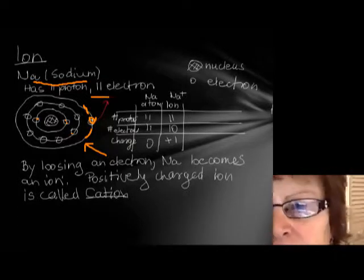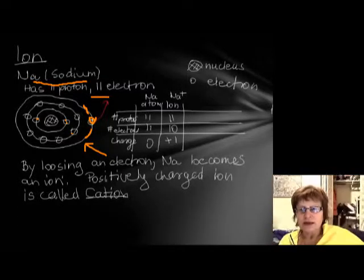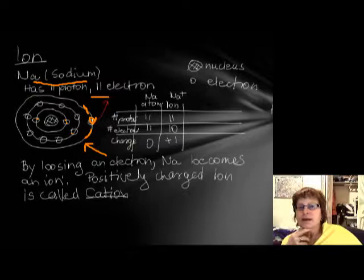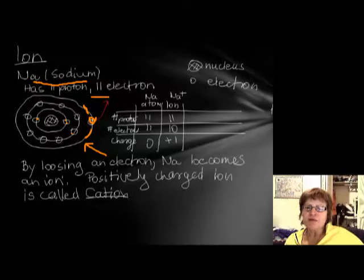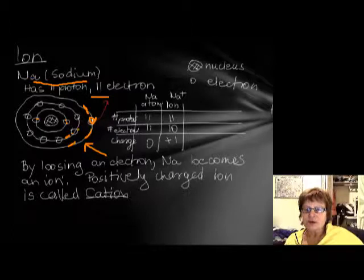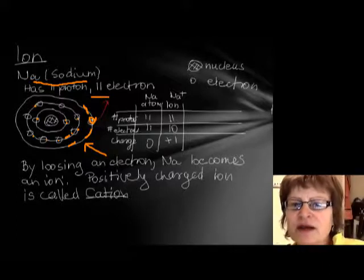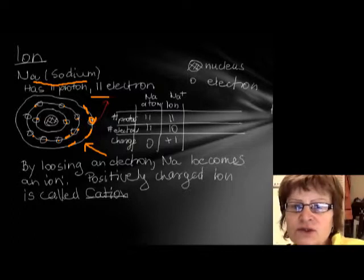Is the sodium atom happy? No, because it has just one electron on the outermost shell, and they're happy when they have eight. If this electron wasn't here, then this would be the outermost shell with eight electrons and it would be perfectly happy. So it just has to lose that one electron.